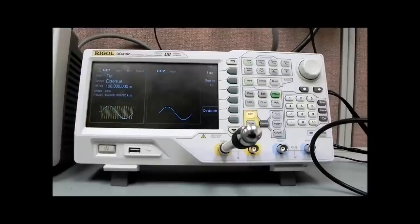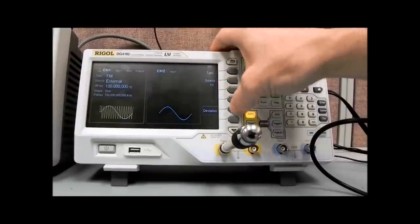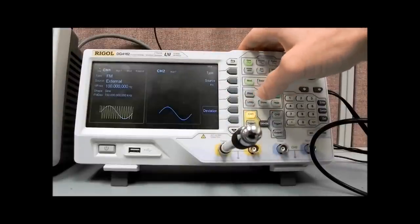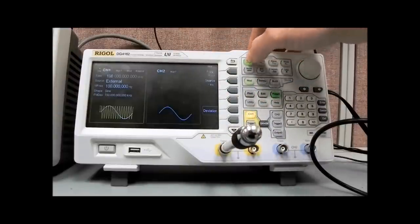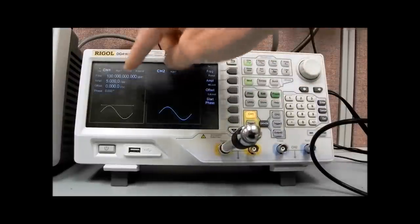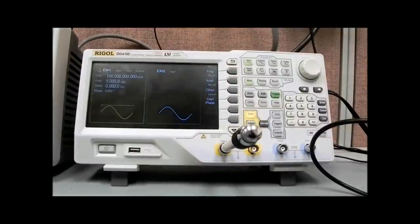And now what we can do, actually, take a look here. The deviation, yeah, 150 kilohertz, and 100 megahertz. And our amplitude is 5 volts. We should be okay there.